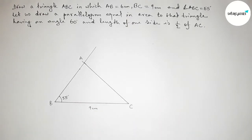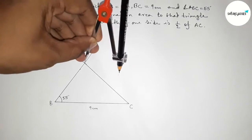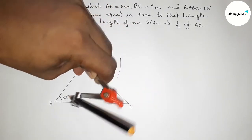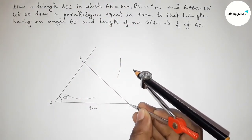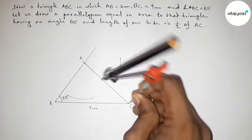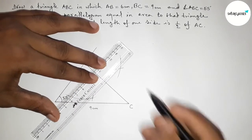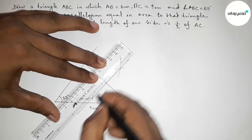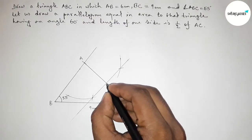Next, we need to find half of AC, so we bisect the line AC. Taking a radius greater than half of AC, we draw arcs from both ends of AC. With the same compass length, we draw arcs from the other end, cutting above and below. Joining these intersection points, the bisector meets AC at a point we call D.